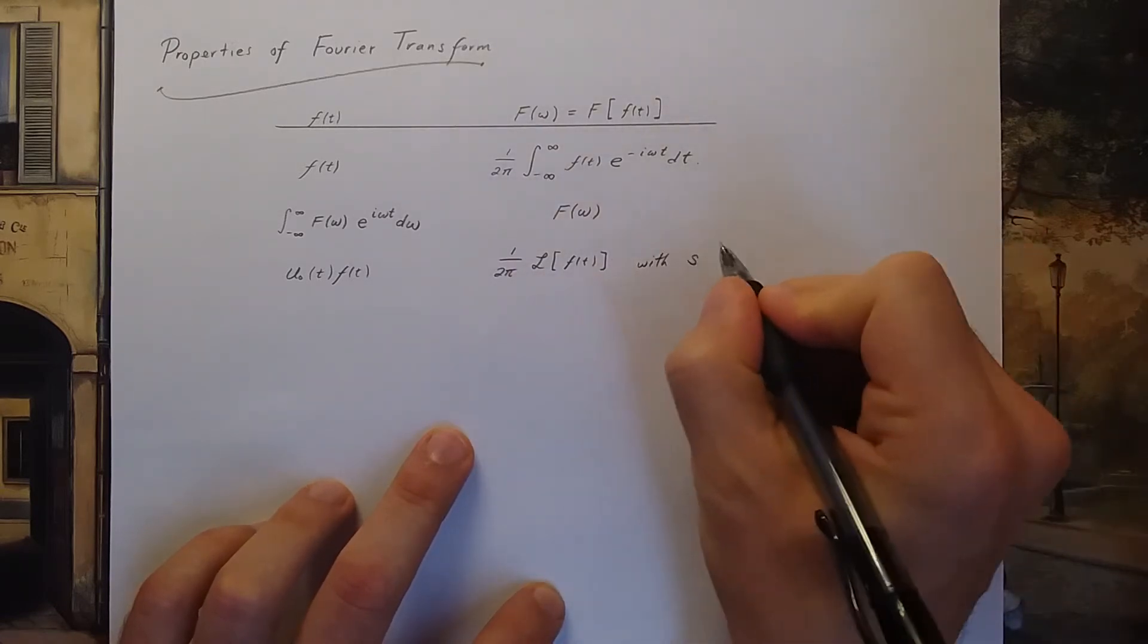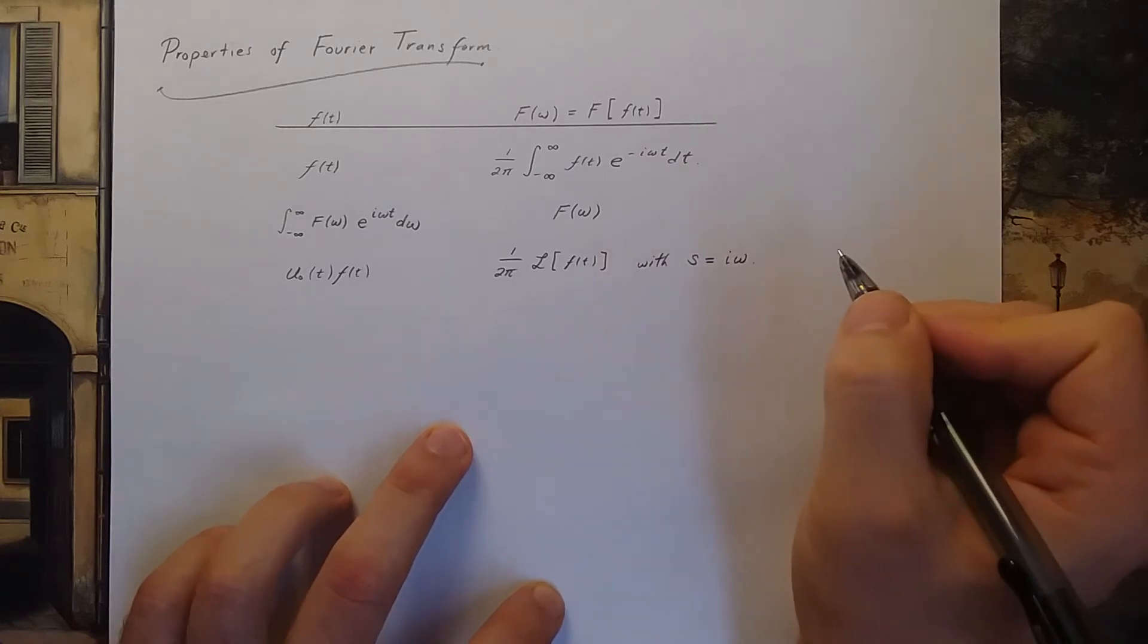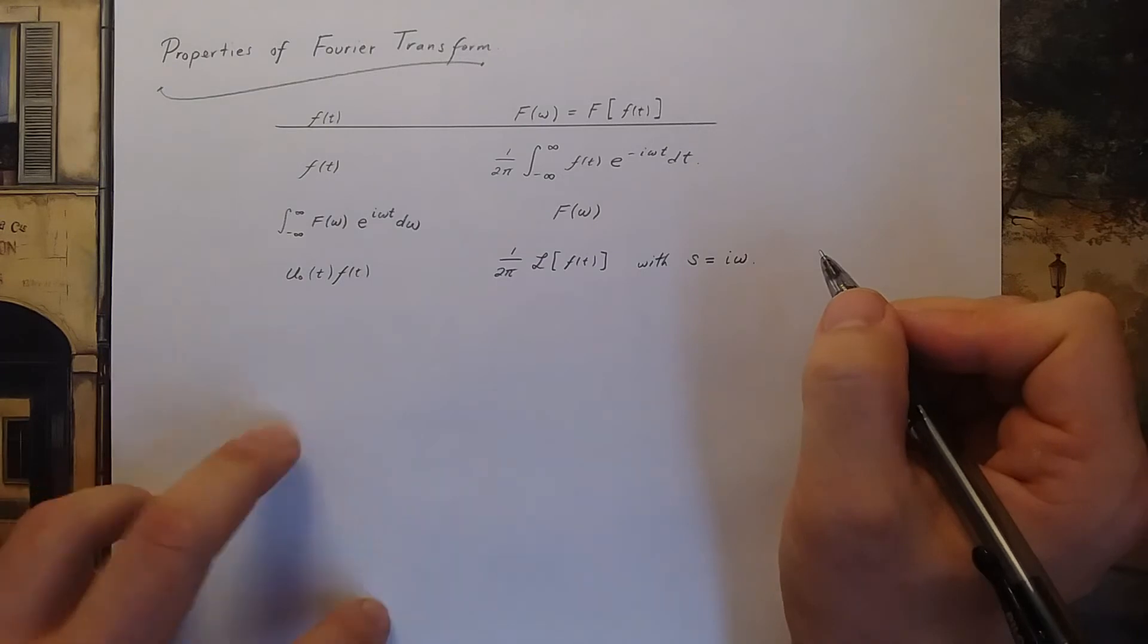...it turns out to be 1 over 2 pi the Laplace transform of your function, except when you take the Laplace transform you take s to be i omega. So that's the connection with the Laplace transform.